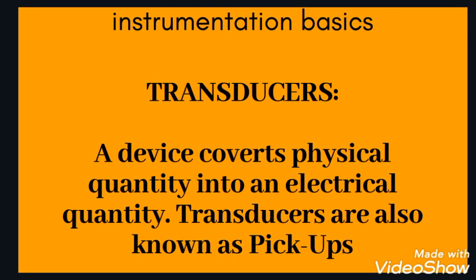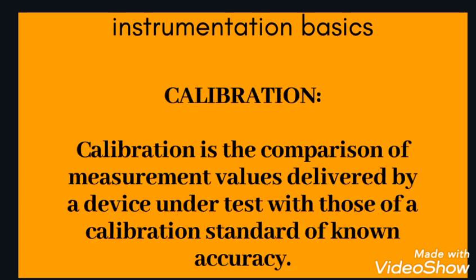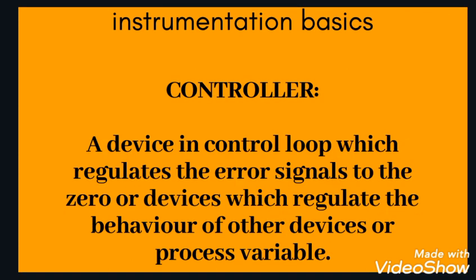Transducer: a device that converts a physical quantity into an electrical quantity. Transducers are also known as pickups. There are many different types of transducer — active and passive. Calibration: the comparison of measurement values delivered by a device under test with those of a calibration standard of known accuracy. We compare with the standard device and then check.